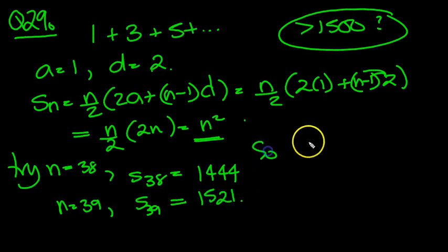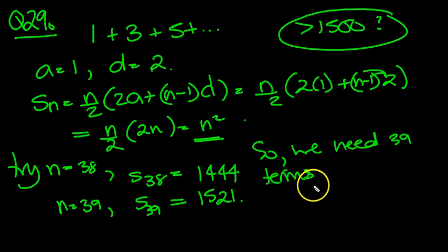So we need 30 terms. Need 39 terms in the sequence for the sum to exceed 15,000.